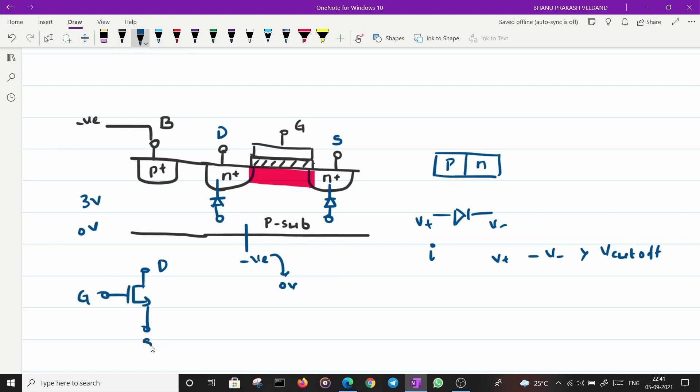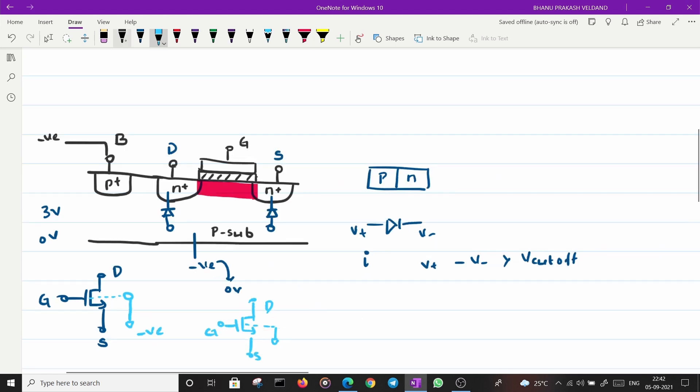A MOSFET is a 4 terminal device where the 4th terminal, bulk, is generally ignored in showing the symbol because it is usually connected to ground or the most negative voltage. So people loosely draw the MOSFET diagram this way: gate, drain, and source. But there is always a bulk terminal, 4th terminal, which is there. So this is all about NMOS, N channel MOSFET, which has electrons as the carriers and the current flows from drain to source.